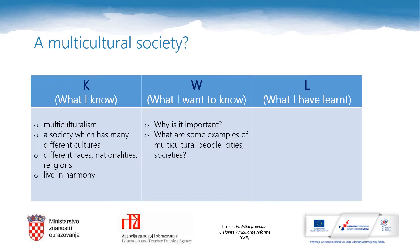In the second column, if you don't have words and expressions, please add them. If you do, check what else you have in your first column — maybe you can add some more. In the second column, what I want to know: my questions are why is this topic important, and what are some examples of multicultural people, multicultural cities, and multicultural societies? What are your questions?